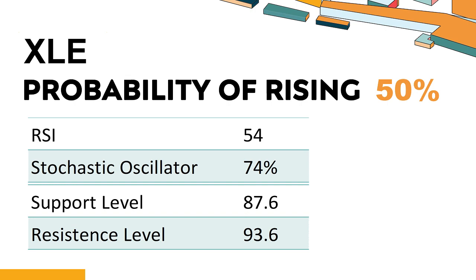The current stochastic oscillator of XLE is 74%. When the stochastic oscillator stays between 50 and 80, it may indicate that the stock is experiencing a mild downtrend with some selling pressure. In this case, an oversold signal could indicate that the stock is reaching a potential buying opportunity.